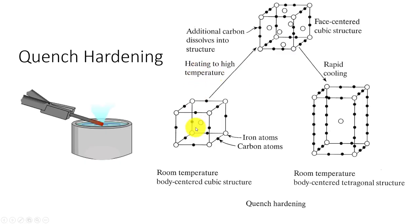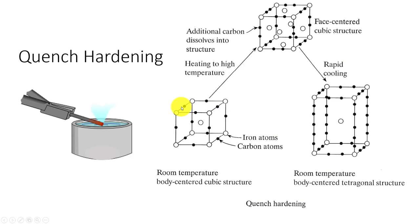We're going to take that body centered cubic structure. There are some different atoms shown here — each white one is an iron atom, and at the centers here are non-lattice points. We call the corners lattice points and these are non-lattice points. This little dark one is our carbon. Higher carbon means we're going to put more of those in there. That's an interstitial strengthening mechanism that can make metal stronger.